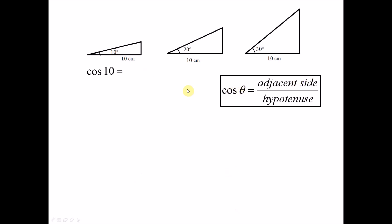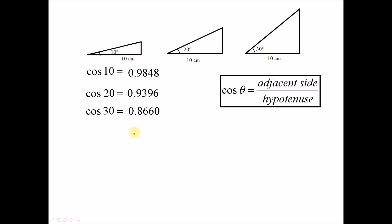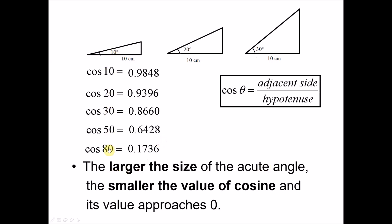For cosine, we repeat the same process but use the adjacent side divided by the hypotenuse. Cosine 10° gives approximately 0.9848, cosine 20° gives 0.9396, cosine 30° gives 0.8660, cosine 50° and cosine 80° continue to decrease. The conclusion: the larger the size of the acute angle, the smaller the value of cosine, and it approaches 0.